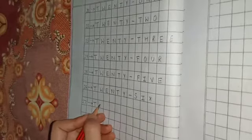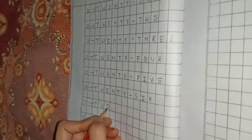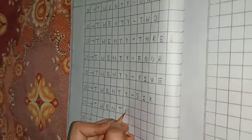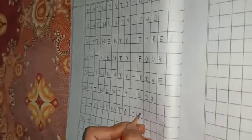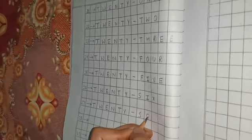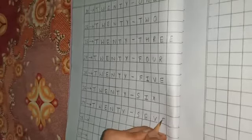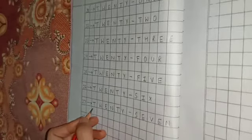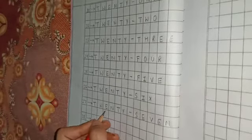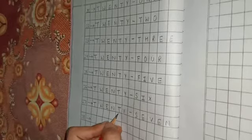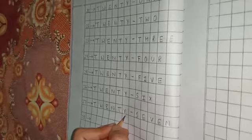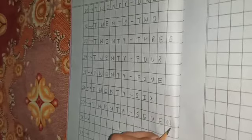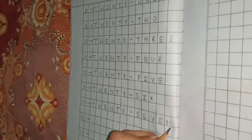Next is 27. T-W-E-N-T-Y, that's 20. S-E-V-E-N, that's 7. Twenty-seven, 27.